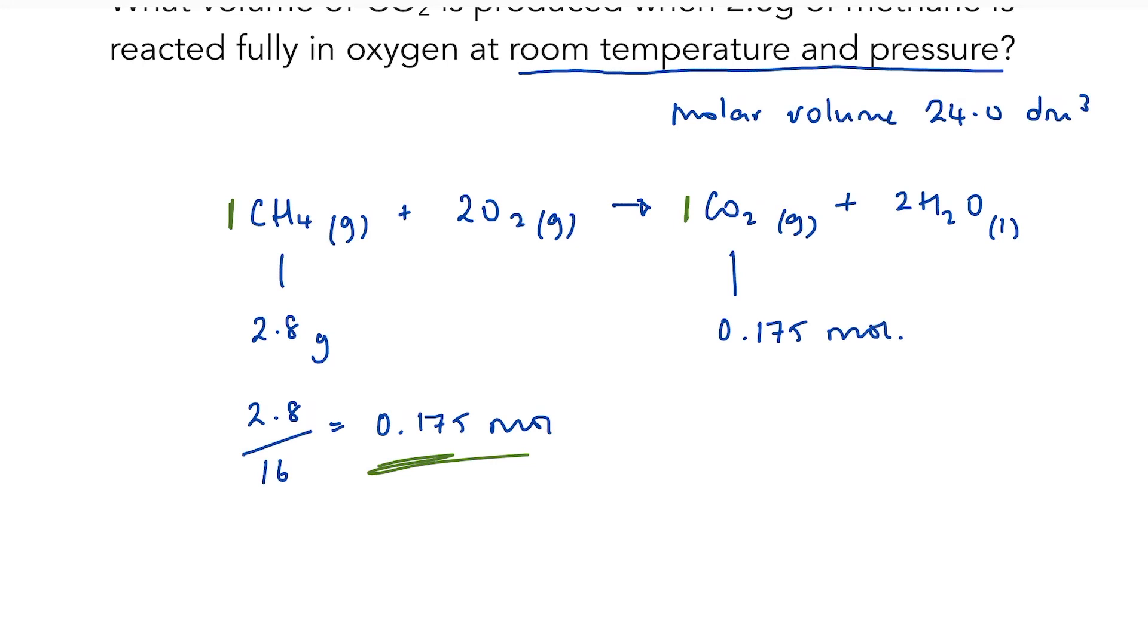So what would that be as a volume? Well, I know that one mole of carbon dioxide is going to occupy 24 decimetres cubed, so all I need to do is scale it down: 0.175 times 24.0, which comes to 4.2 decimetres cubed. That is the volume of carbon dioxide I will produce.